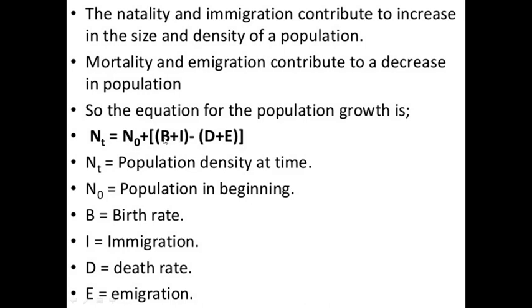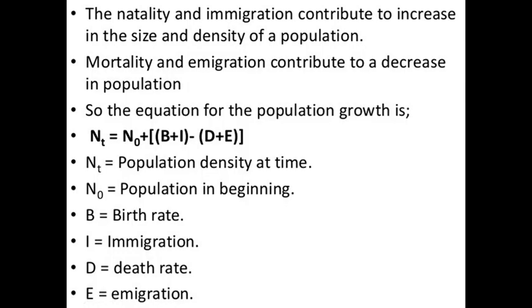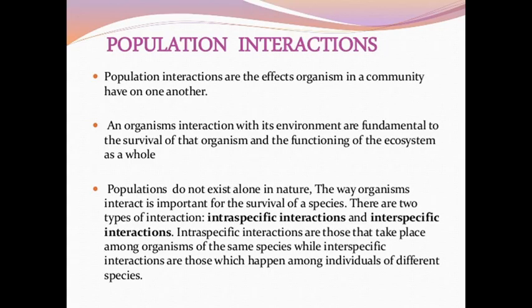Adding birth rate plus immigration and subtracting death rate plus emigration gives us the population density at a particular given time. This is how we calculate population density at any given time.